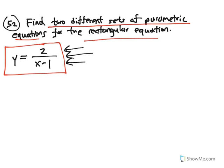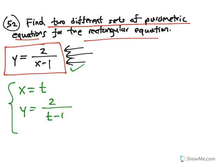For the rectangular equation y = 2/(x−1), one easy approach is to let x = t. Then y = 2/(t−1). This is one valid set of parametric equations, and its graph matches the rectangular equation. There are many ways to choose the parameter t.